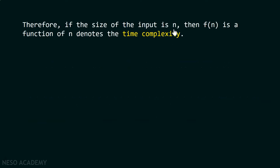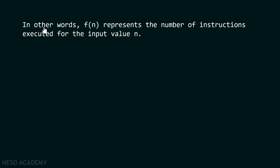Therefore, if the size of the input is n, then f(n), a function of n, denotes the time complexity. f(n) is nothing but a function which denotes the time complexity and depends on input n. In other words, f(n) represents the number of instructions executed for the input value n.